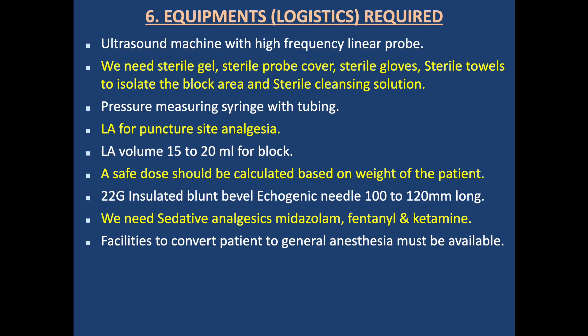Equipment and logistics: We need an ultrasound machine with a high-frequency linear probe, sterile gel, sterile probe cover and sterile gloves, sterile towel to isolate the block area, and sterile cleansing solution. We need a pressure monitoring syringe with tubing, local anesthetic for puncture site analgesia, and a local anesthetic volume of 15–20 ml for the block, with safe dose calculated based on patient weight. A 22-gauge insulated blunt bevel echogenic needle 100–120 mm long is required, plus sedatives — midazolam, fentanyl, and ketamine.